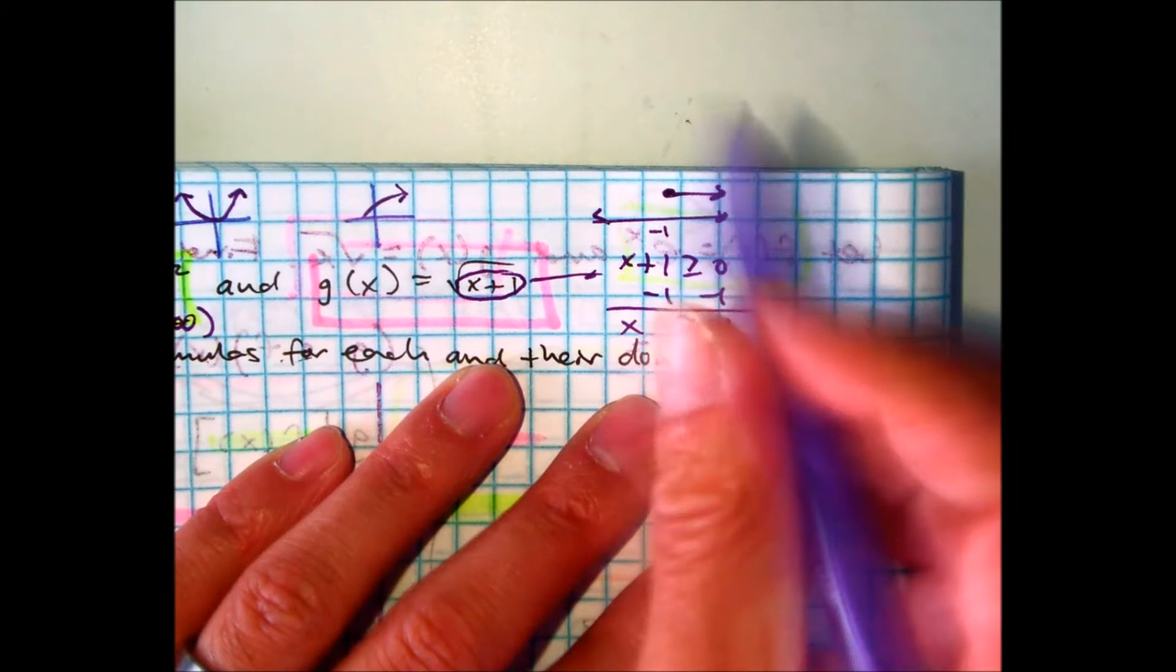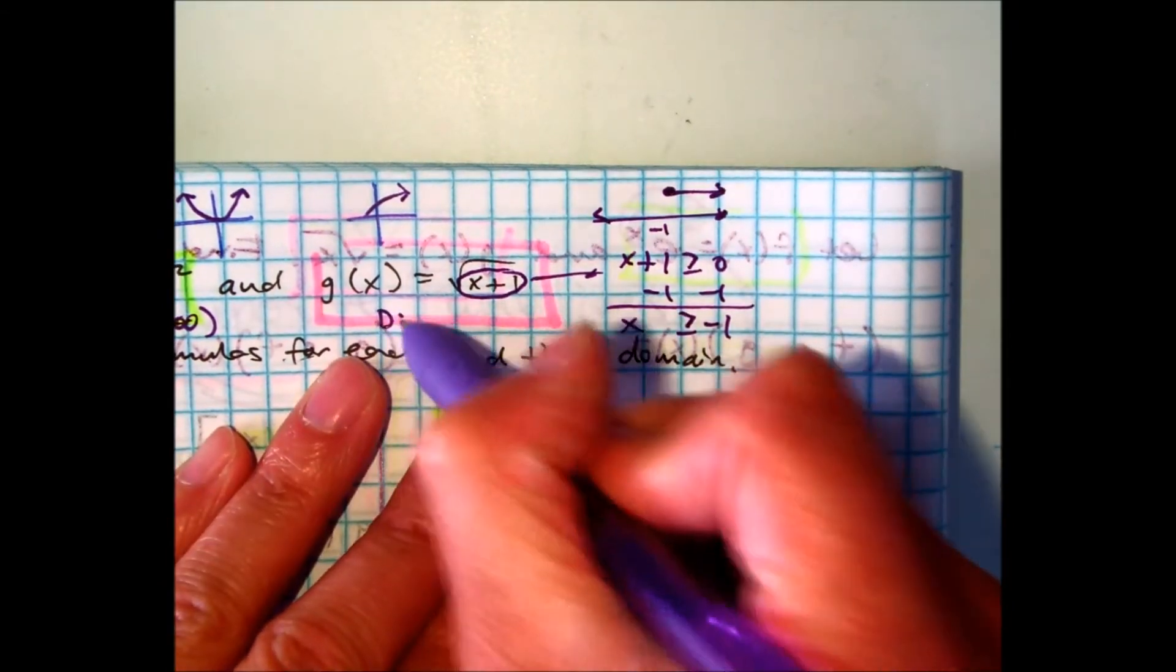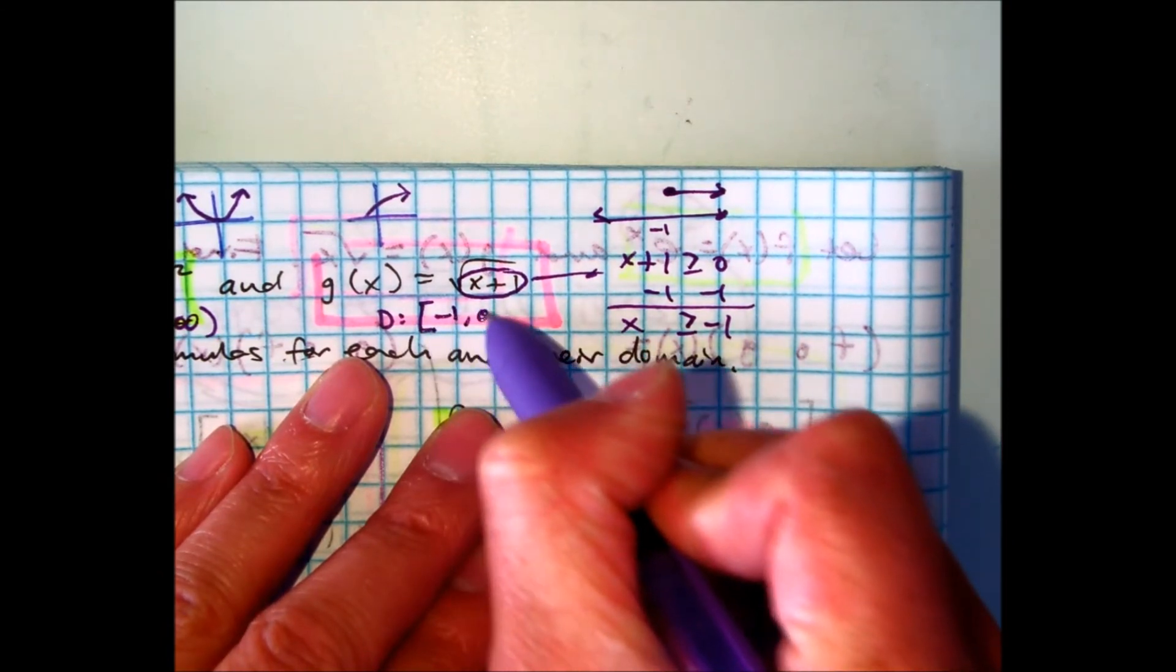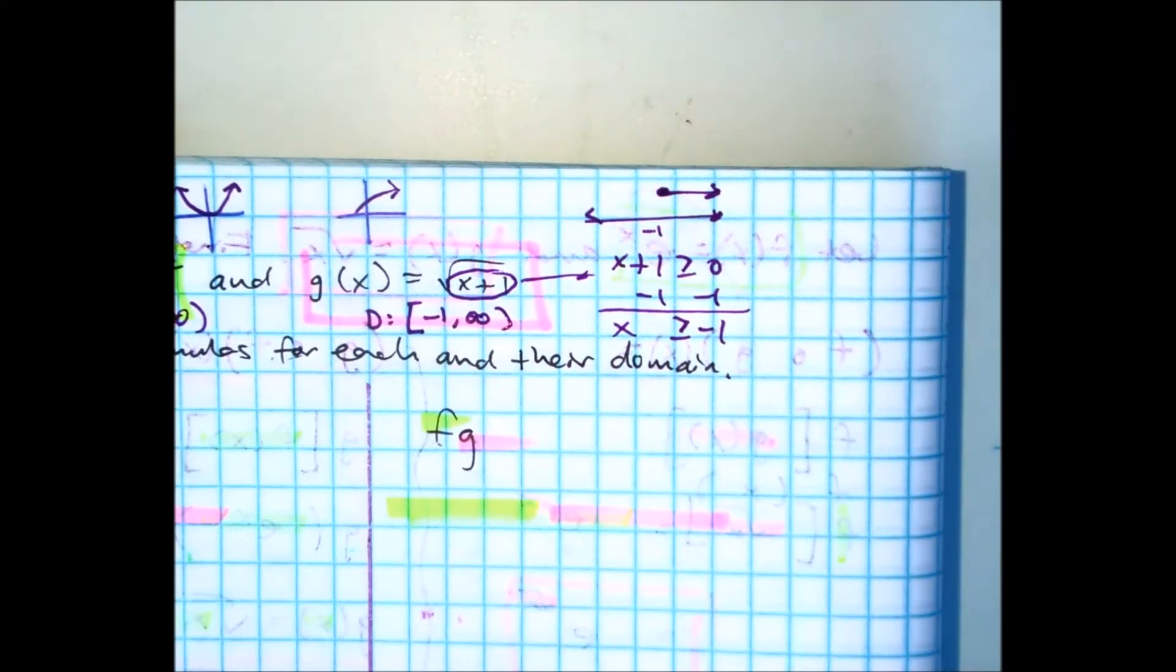So, in interval notation, your domain would be bracket negative one, comma, infinity. Raise your hand if you got that.